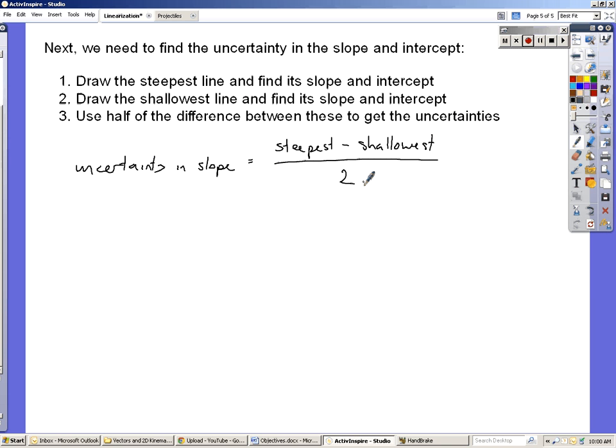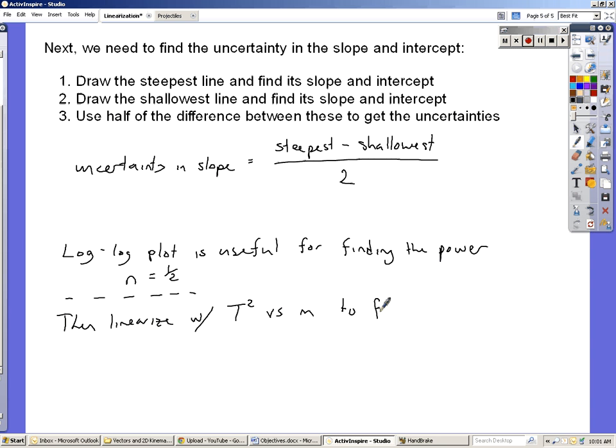And from there it's stuff you already know how to do. What the log-log plot is useful for is for finding the power. So in this case, we found that n equals 0.5, or one-half. Then what you would do is once you established that, you would then go linearize with T² versus m to find k. Because using the intercept to calculate things is usually not a great idea, because uncertainties there can really screw you up. So what you do is you use the log plot to establish that that is in fact a square root curve, and not say a cube root curve, and then you would linearize the normal way.